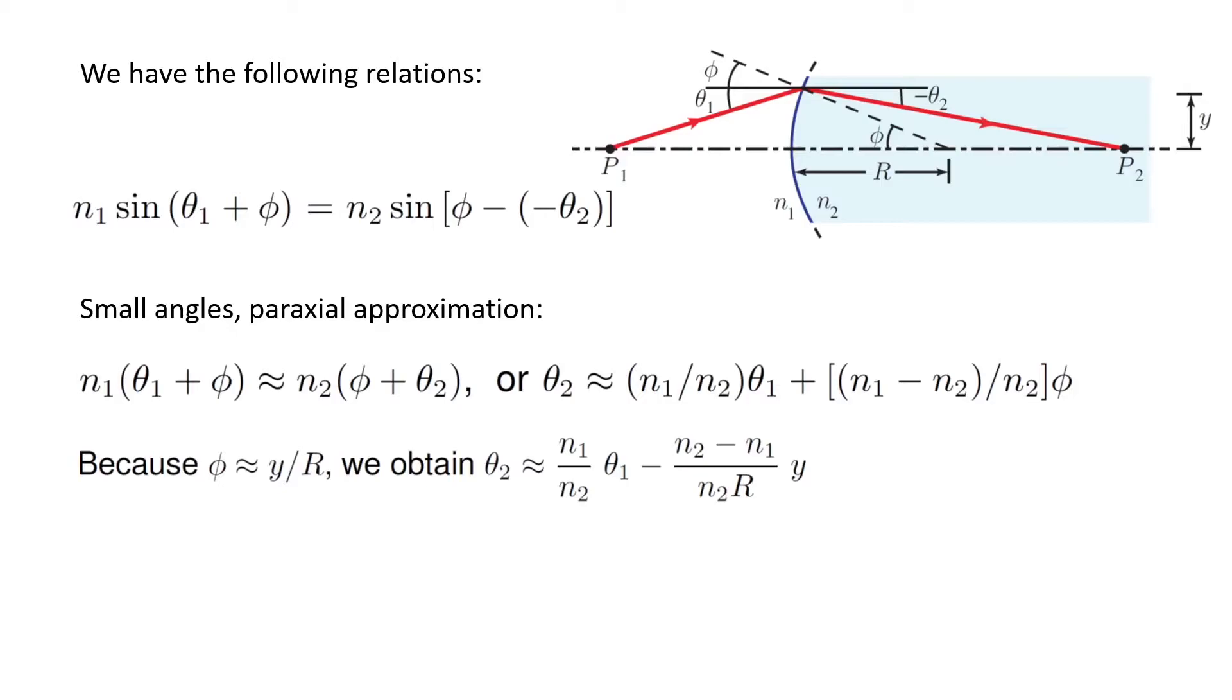But from the figure we see that angle phi is almost equal to y over R. The distance between the center of curvature to the boundary is R, and the height is also y. So I can approximate and write phi is equal to y over R.